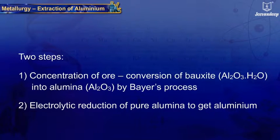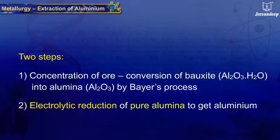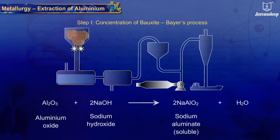Extraction of aluminium consists of two steps: Step 1 – Concentration of ore, that is conversion of bauxite into alumina by Bayer's process. Step 2 – Electrolytic reduction of pure alumina to get aluminium.